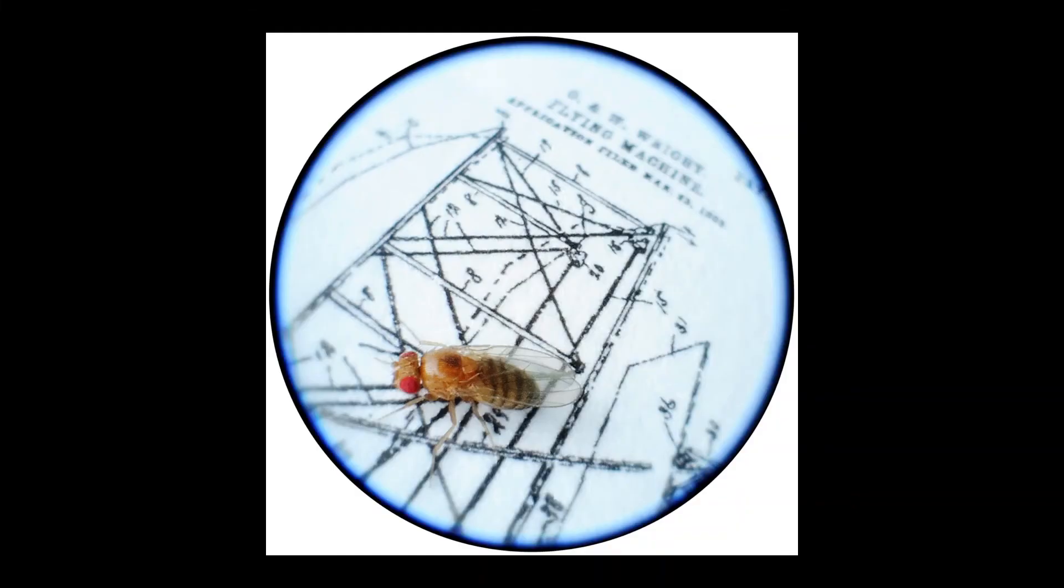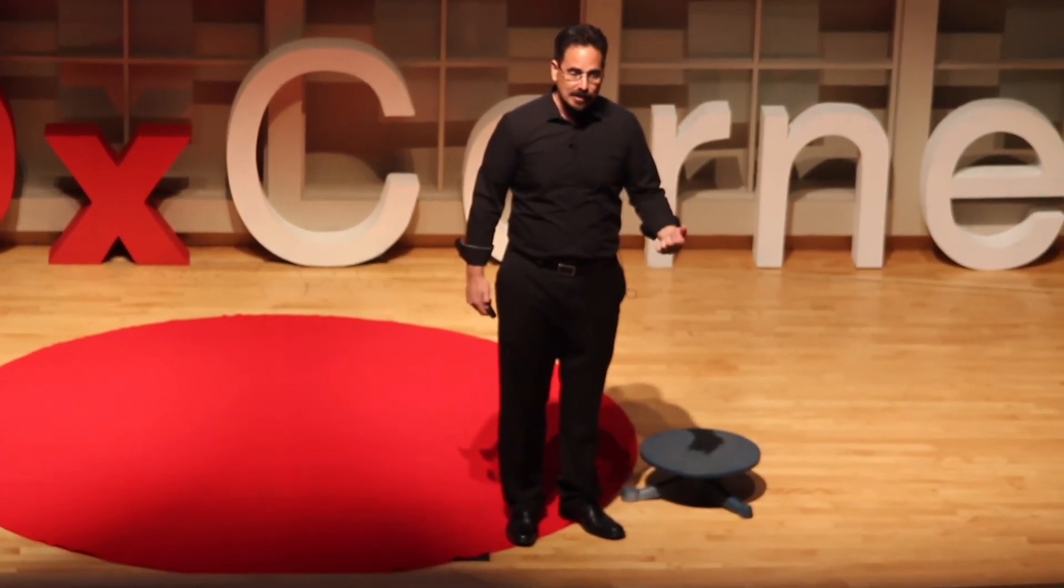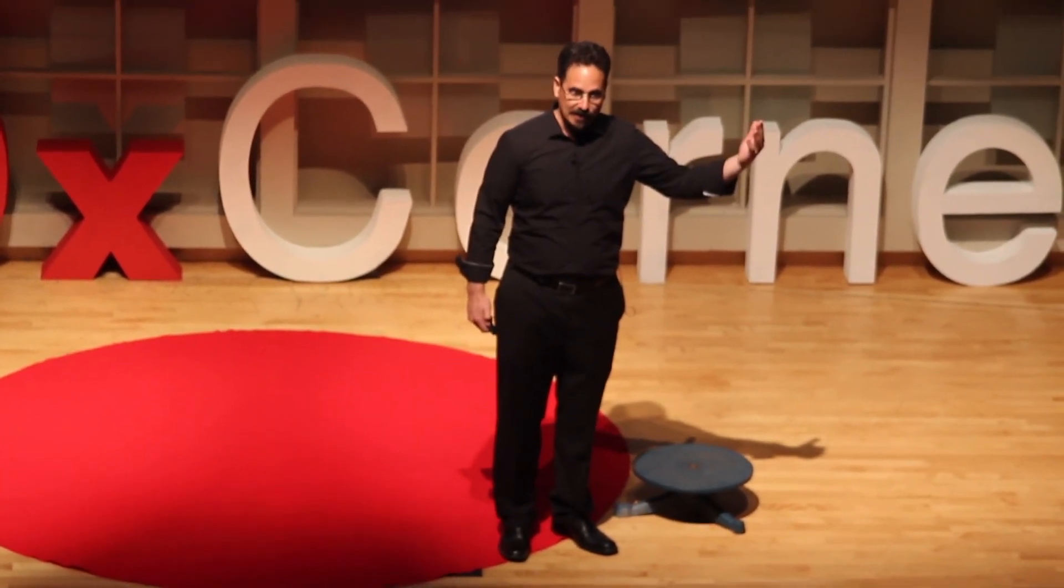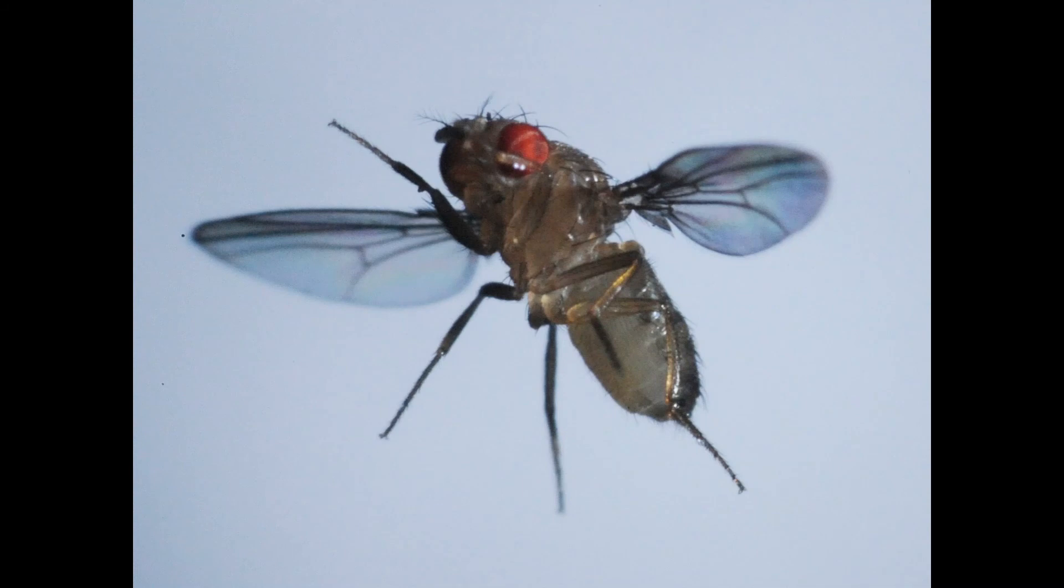So let me leave you with this image of the simple fruit fly on top of the patent by the Wright brothers, and point out that 350 million years ago, before insects take to the air, there are no trees. There are no flowers. All plants are less than three meters tall. So the ability of insects to take to the air and eventually control their flight has a massive impact on the ecology of this planet. This is Drosophila melanogaster. Aren't they beautiful? Thank you.